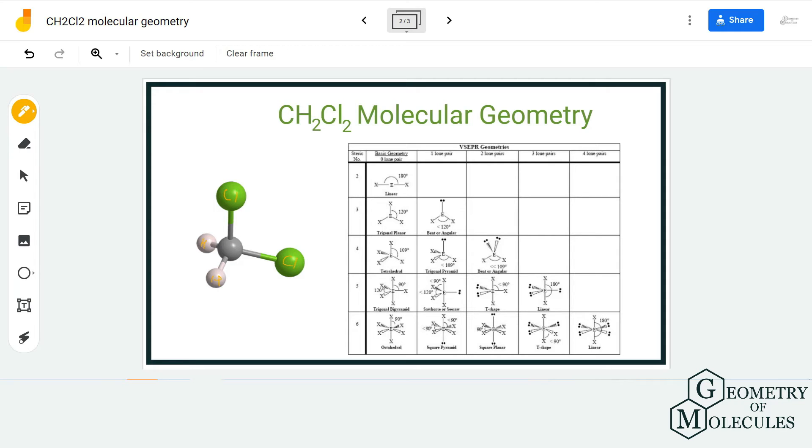This is because, as per VSEPR theory, the atoms of the molecule take place such that the repulsive forces between bonding pairs of electrons and non-bonding pairs of electrons are at minimal, and hence they try to take such shape.